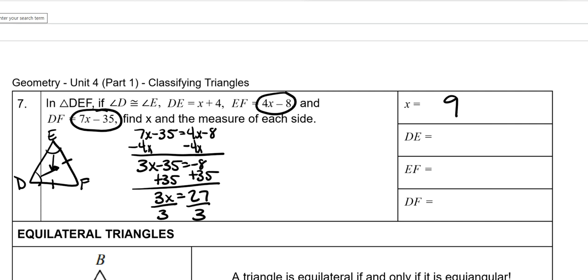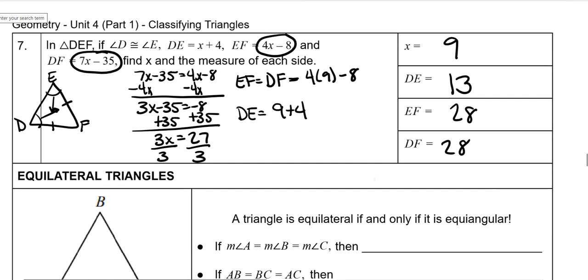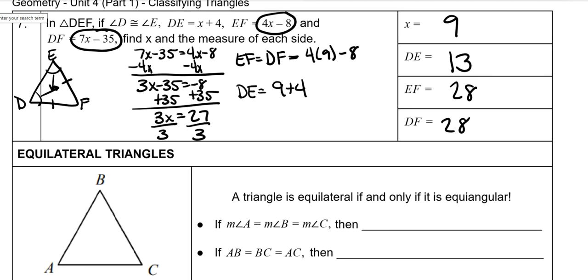We need to find all the sides, but we already found that EF and DF are the same. I'm going to plug it into EF just because smaller numbers. 4 times 9 is 36 minus 8 is 28. So 28 and 28. And these are sides, so you cannot subtract these from 180 and get DE. You actually have to plug that in. So 9 plus 4 is 13, and to be fair, that's easier than subtracting from 180 anyway.